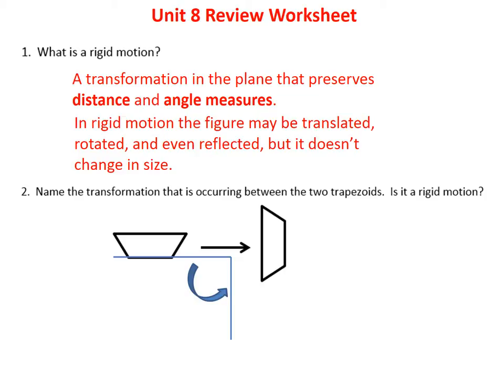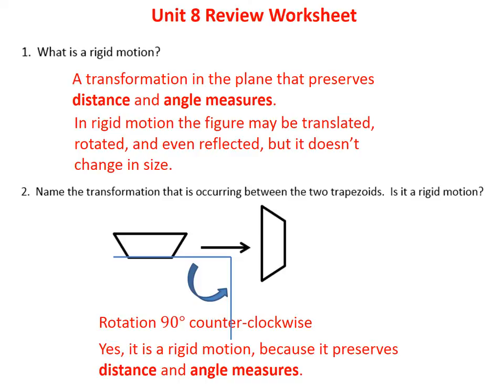Problem number two asks us to name the transformation occurring between those two trapezoids. If you notice the blue lines I've drawn, you can see that the figure is simply being rotated counterclockwise 90 degrees. That's the transformation — it's a rotation. Is it a rigid motion? Yes. You'll notice both shapes have the same size, the sides are the same length, and the angles are the same measure, so it is a rigid motion.